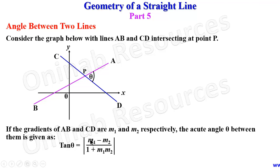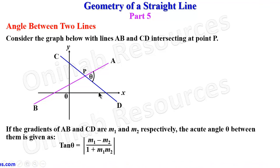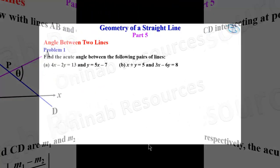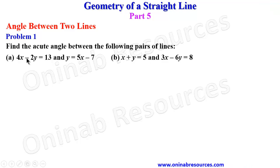This could also be m2 minus m1 — whichever is convenient for you. This is what we'll be using to calculate the acute angle between two intersecting lines. So we take our first problem: find the acute angle between the following pairs of lines. We are given the equations of the lines in both parts a and b.